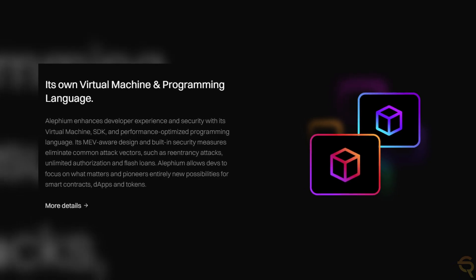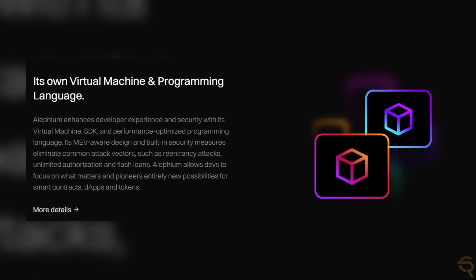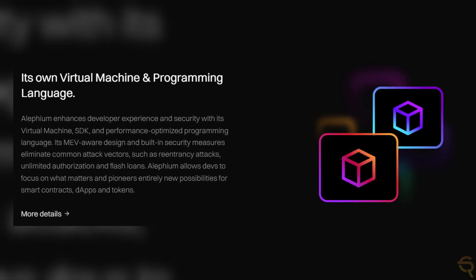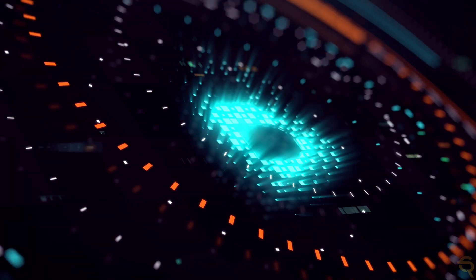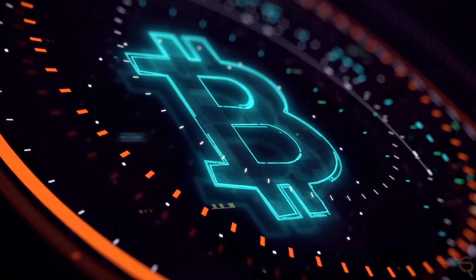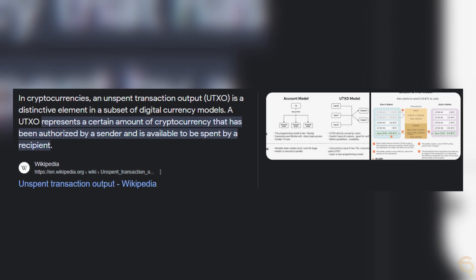Alephium allows developers to focus on what matters and pioneers entirely new possibilities for smart contracts, dApps, and tokens. The stateful UTXO model is an enhancement of the traditional UTXO model used in blockchain systems like Bitcoin. In a conventional UTXO model, the blockchain keeps track of unspent outputs from transactions, which can then be used as inputs for new transactions. This model is known for its simplicity and security in tracking ownership of assets.